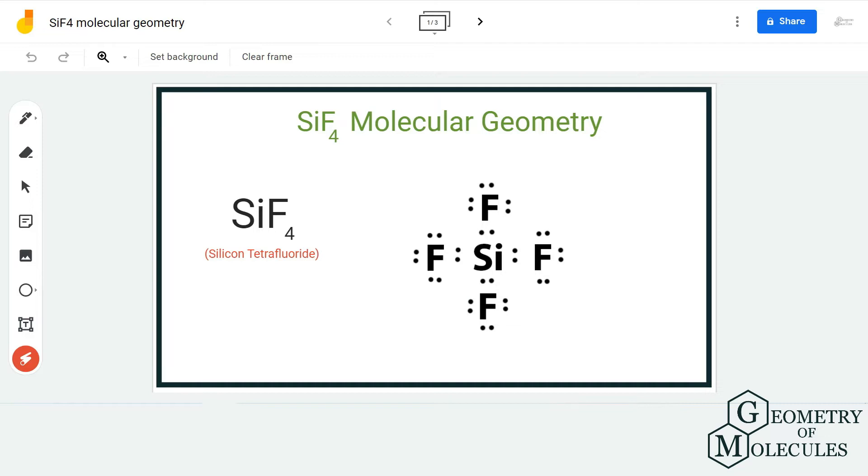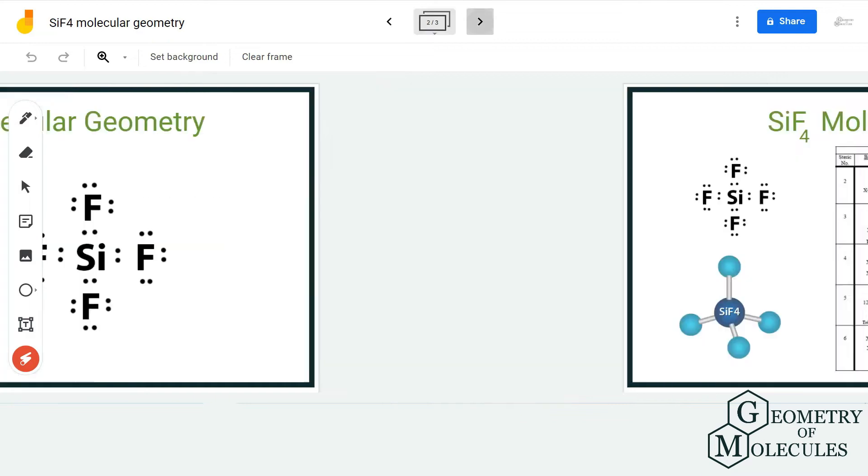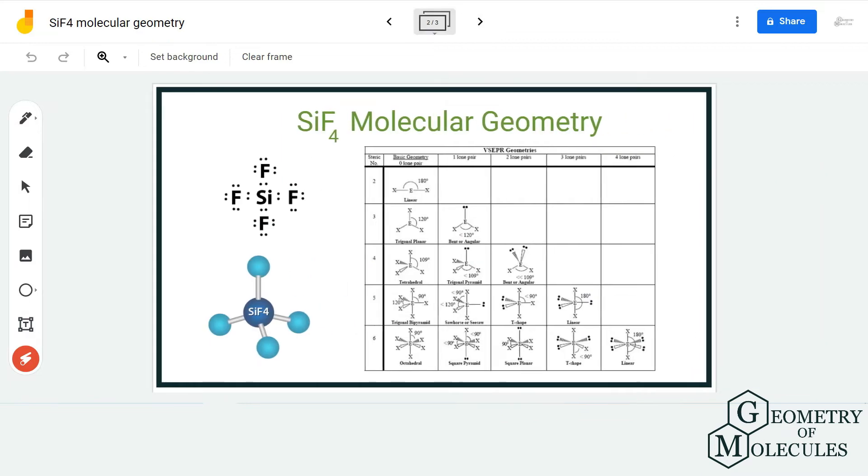Then we use the steric number formula or AX notation to find out its molecular geometry. So all these fluorine atoms, when they bond with the silicon atom, they will try to be as far away from each other as possible.